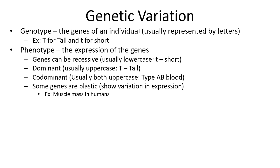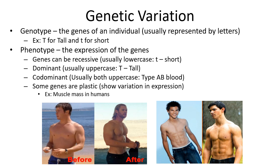An example of gene plasticity is muscle mass in humans. We all have genes for muscles, and that does affect how muscular we are, but we can also do things to enhance our muscle structure — work out, eat different foods, focus on specific exercises to strengthen different body parts and increase muscle mass. This trait has both a genetic component and an environmental component.